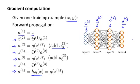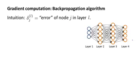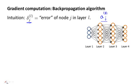Next, in order to compute the derivatives, we're going to use an algorithm called backpropagation. The intuition of the backpropagation algorithm is that for each node, we're going to compute the term delta superscript l subscript j. That's going to somehow represent the error of node j in layer l. Recall that a superscript l subscript j is the activation of the j-th unit in layer l. And so this delta term is in some sense going to capture our error in the activation of that node, or how we might wish the activation of that node was slightly different.